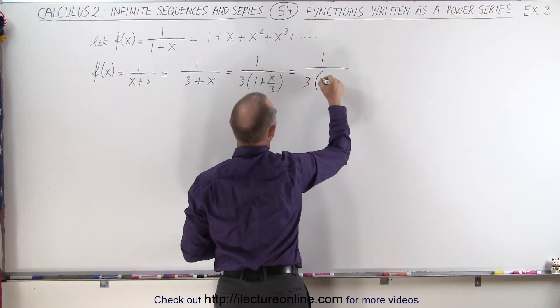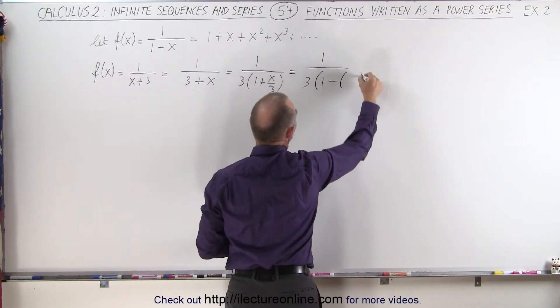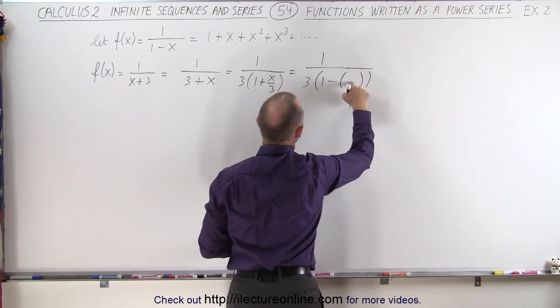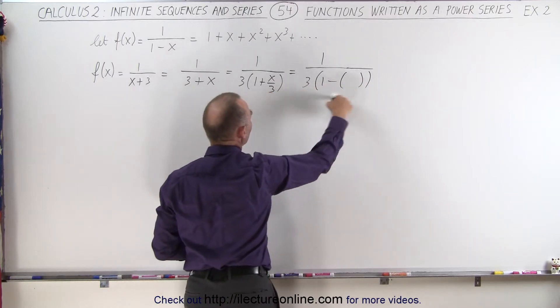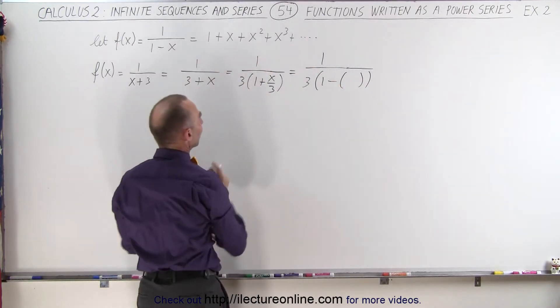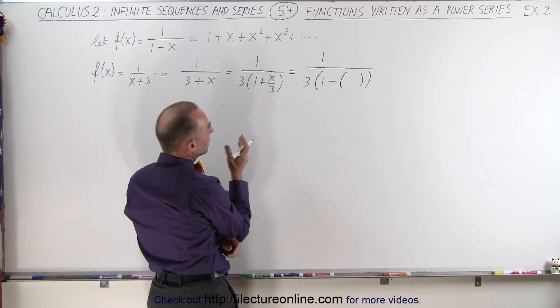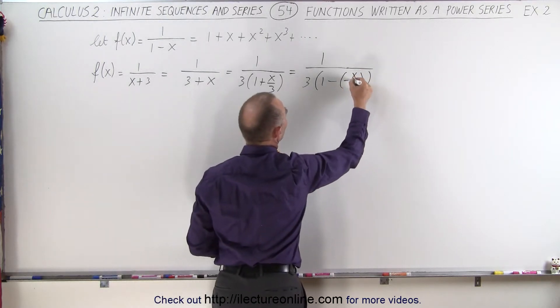So this can be written as 1 over 3 times 1 minus, and now we need something in here. So we get the exact same thing, but now it looks like it's in this format. And so it looks like we're going to need a negative x over 3.